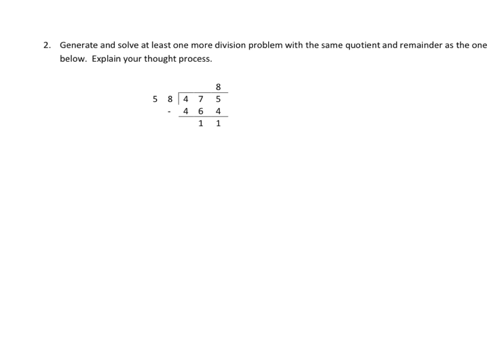This problem tells us to generate and solve at least one more division problem with the same quotient and remainder as the one below. Explain your thought process. This is very similar to what we've done in some of the previous lessons, except this time they're going to ask us to explain what we're doing. First thing I notice here is that we seem to be missing our remainder, and of course that's easy enough to find. So we'll put the R11. I'm going to verbally explain this process.